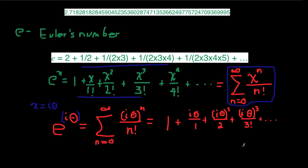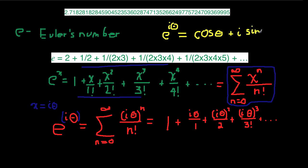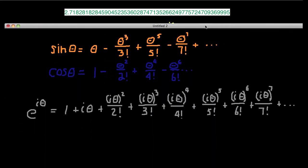So this is a bit more information about e to the i theta. Now, if you recall, I told you earlier that e to the i theta is equal to cosine theta plus i, the complex constant, times sine theta. How can we show that that's possibly true? Well, let me give it a try.